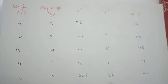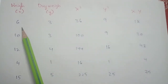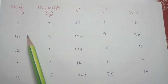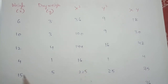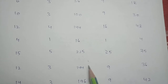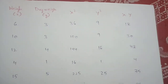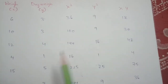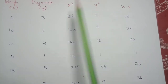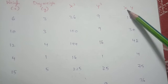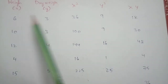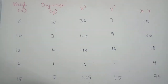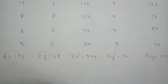X squared values: 6 squared is 36, 10 squared is 100, 12 squared is 144, 4 squared is 16, 15 squared is 225, 12 squared is 144, and so on. Y squared: 3 squared is 9, 3 squared is 9, 4 squared is 16, 1 squared is 1, 5 squared is 25. For XY: 6 times 3 is 18, 10 times 3 is 30, 12 times 4 is 48, and so forth.